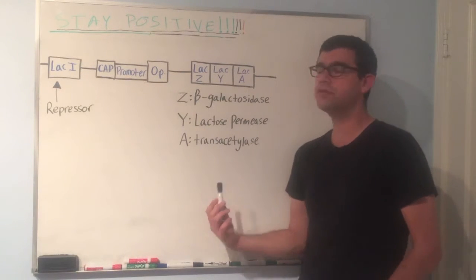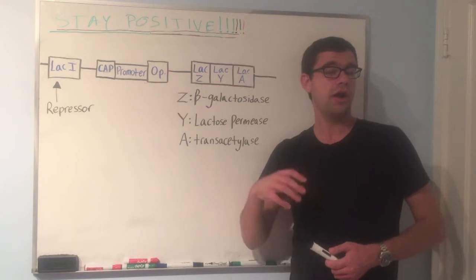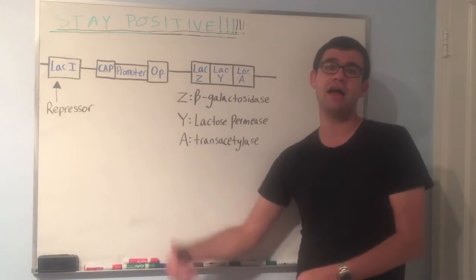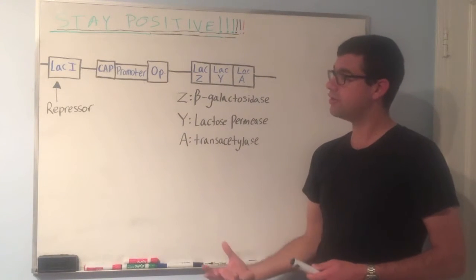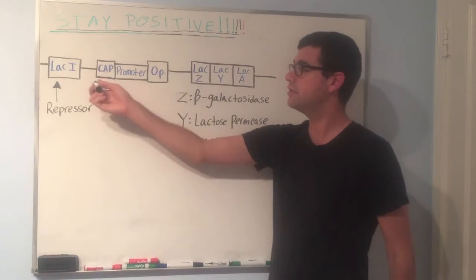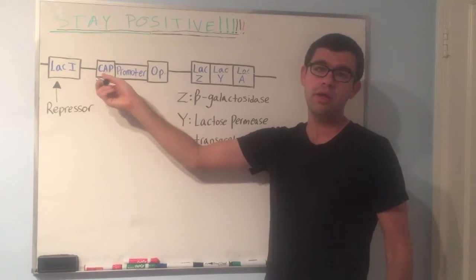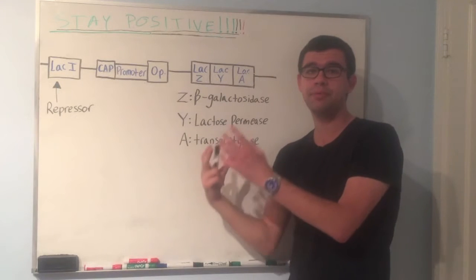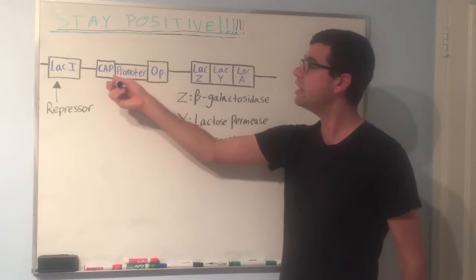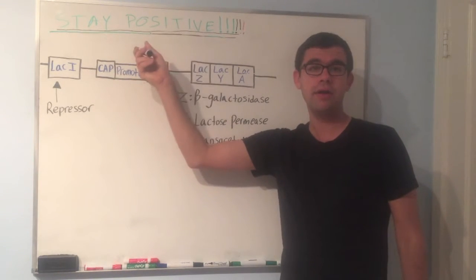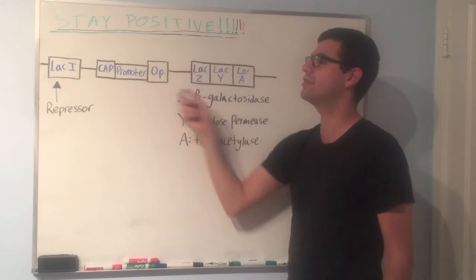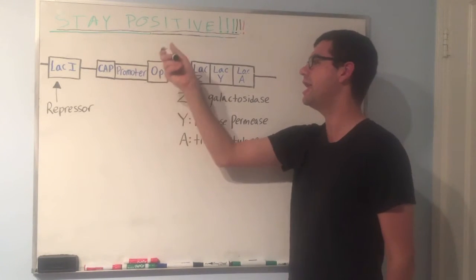And here's the explanation why. When concentration of glucose is low, the concentration of cyclic AMP is high. And when the concentration of cyclic AMP increases, it can bind to this protein right here called CAP. And the cyclic AMP CAP complex can then increase the affinity that RNA polymerase has for this region, for the promoter, so that it can express more.